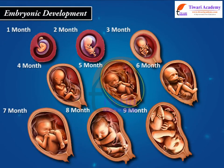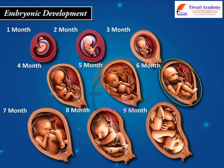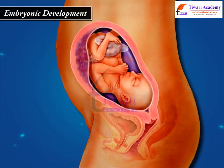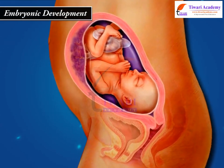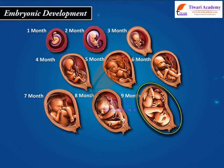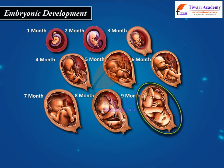The fifth month is marked by the appearance of hair on the head. By the end of 24 weeks, the second trimester, the body is covered with fine hair, eyelids separate, and eyelashes are formed. By the end of nine months of pregnancy, the fetus is fully developed and is ready for delivery.